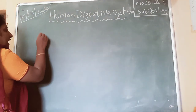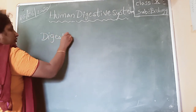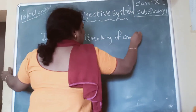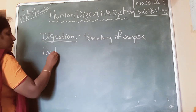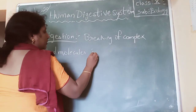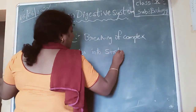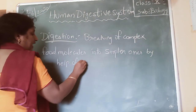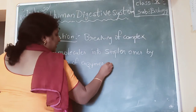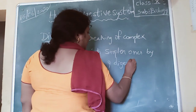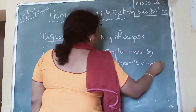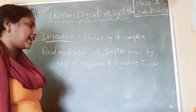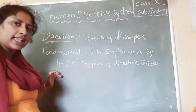First we will define digestion. What is digestion? Digestion is the breaking of complex food molecules into simpler ones by the help of enzymes and digestive juices. That process is called digestion.